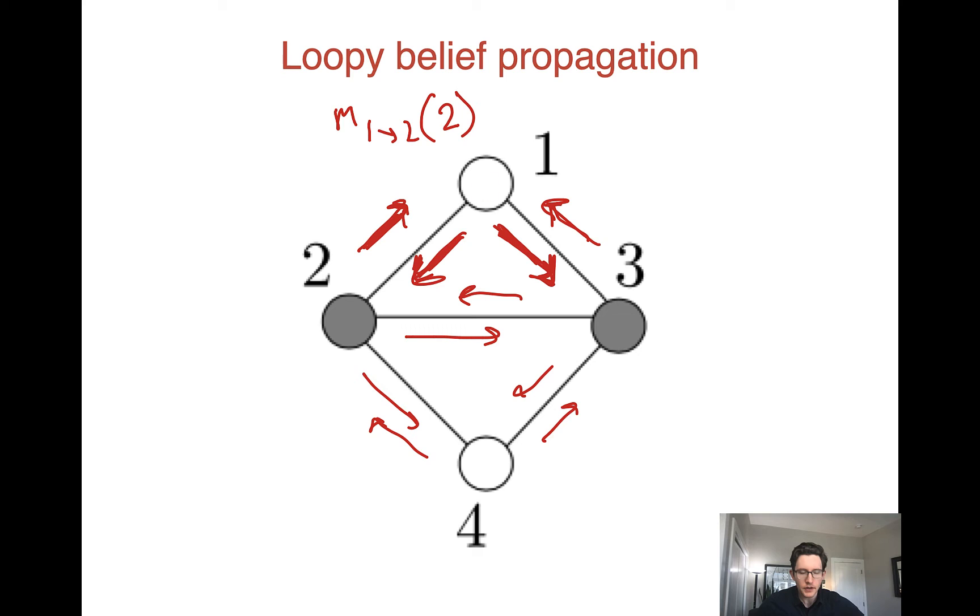Now, if we want the distribution over a given node, well, we can calculate that. We have all the messages coming in that we need to get a distribution over node one. But note that the messages from one are now out of date. Because, for example, when we computed the message from one to three, we used the message from two to one. And now there's a new message. So this message is out of date. So we're going to iterate.